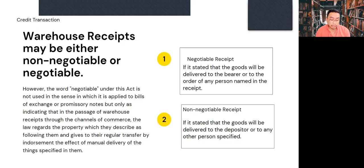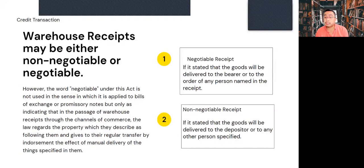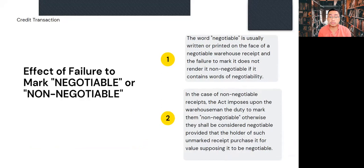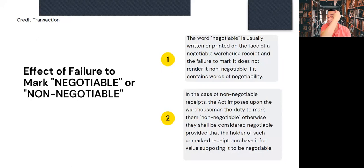Under Section 5 of the Warehouse Receipts Act, a negotiable receipt is one which states that the goods will be delivered to the bearer or to the order of any person named in the receipt. A non-negotiable receipt, also defined in Section 5, is one which states that the goods will be delivered to the depositor or to any other specified person. The word 'negotiable' is usually written or printed on the face of a negotiable warehouse receipt, and failure to mark it does not render the receipt non-negotiable if it contains words of negotiability.